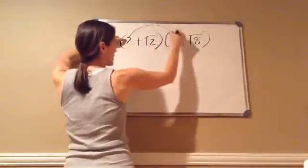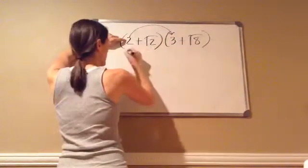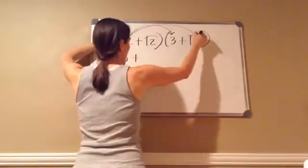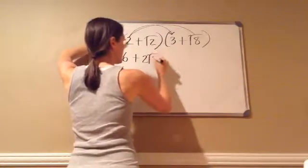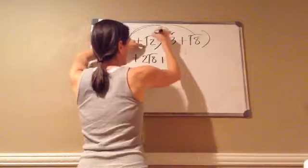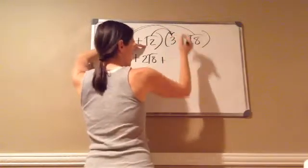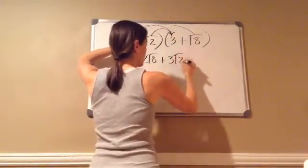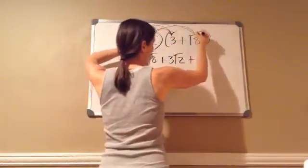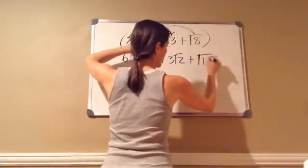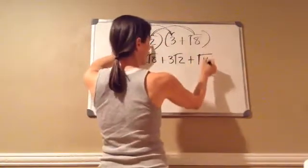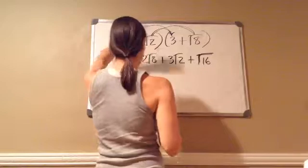We're going to take this number times this number. So 2 times 3 is 6, plus 2 times square root of 8 is 2 square root of 8. Plus square root of 2 times 3, which is 3 square root of 2, plus square root of 2 times the square root of 8 equals the square root of 16 — I just multiplied what's on the inside. 8 times 2 is 16.